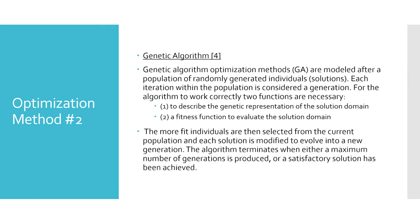The second optimization method used in the modeling is the genetic algorithm. The genetic algorithm is an iterative process which begins with a population of randomly generated solutions. Within the population, each iteration is referred to as a generation. For the algorithm to work correctly, two functions are necessary. The first function is used to describe the genetic representation of the solution domain, and the second is a fitness function to evaluate the solution domain.